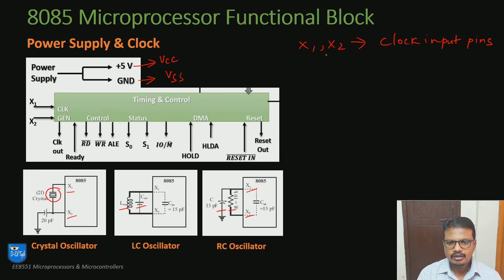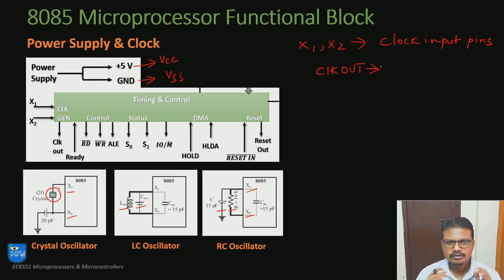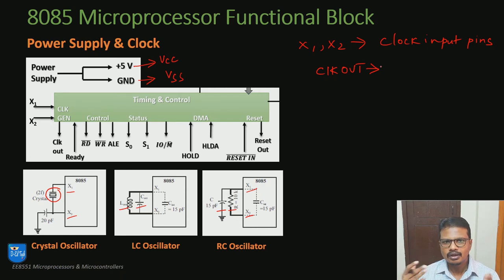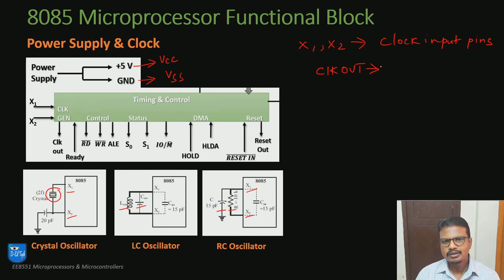The third pin is called the clock out pin, CLK out. This clock out pin is used for triggering external peripherals connected to this microprocessor. If you want to run a peripheral or a secondary processor as a slave to this device, then to synchronize all the clock signals in the system, we will use this clock out pin.